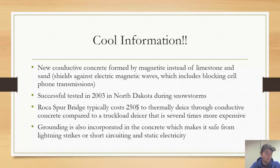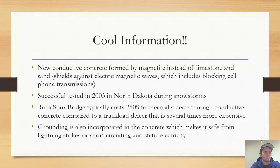On the same note, the Roka Spur Bridge typically spends $250 per truck when they use de-icing chemicals on the road. Compared to the cost of producing, running, and maintaining the conductive concrete, the trucks carrying the de-icing chemicals turned out to be several times greater in cost. This shows that in some places, using this new technology not only saves lives, but it can save money as well.